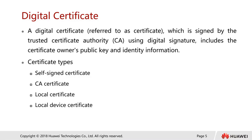First we need to clear up some of the terms. The first term we will be discussing is called the digital certificate. Sometimes a digital certificate is also known as just a certificate, which is signed by a trusted certificate authority — in short, we call it CA. A CA is actually a trusted third party.